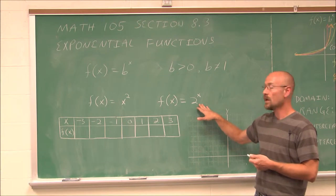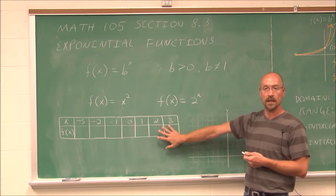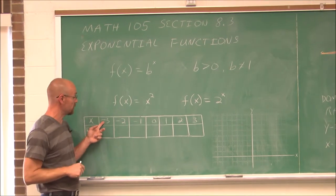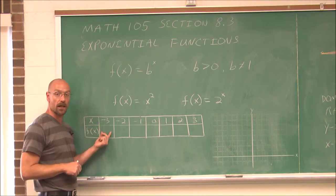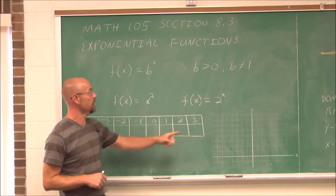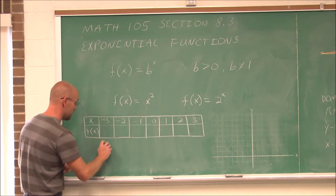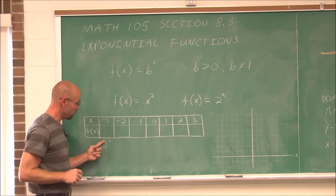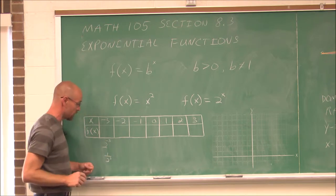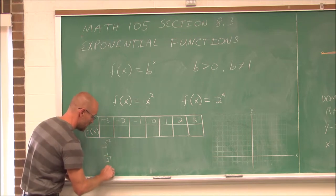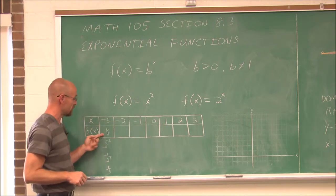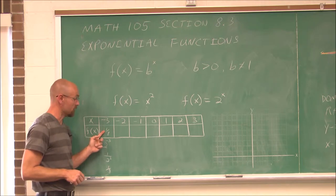Let's take a look at f of x equals 2 to the x and graph this function using a table of values. We'll put in some values of x and find the output f of x. If my input is negative 3, we have 2 to the negative 3rd. A negative exponent means take its reciprocal, which is 1 over 2 to the 3rd, which is 1 eighth. So when x is negative 3 for this exponential function, f of x is 1 eighth.